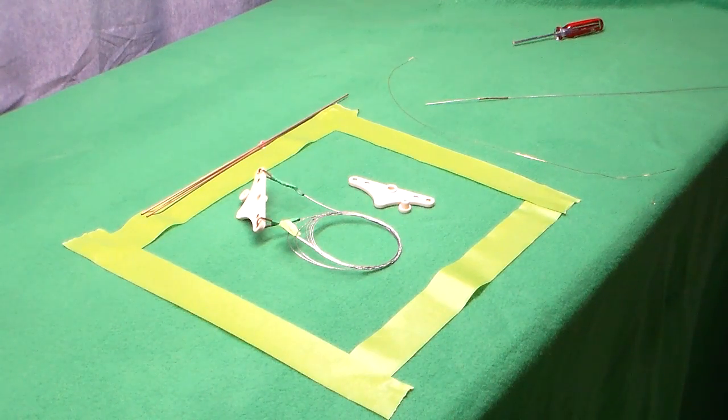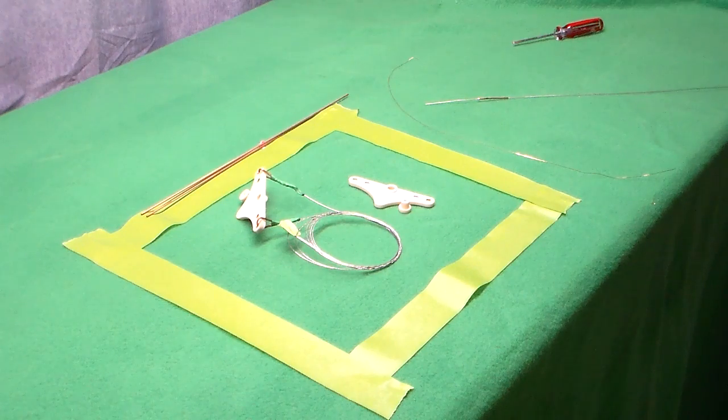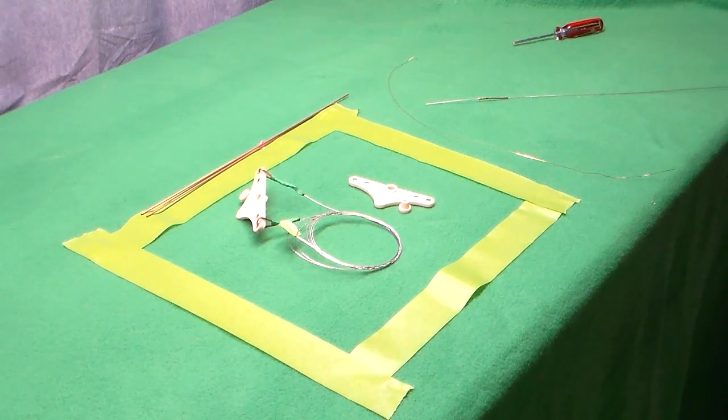The bell crank is the most important part of a control line airplane as far as the control system goes. It is the heart of the control system, or as I said in my previous video, I like to call it the brain of the control line system.